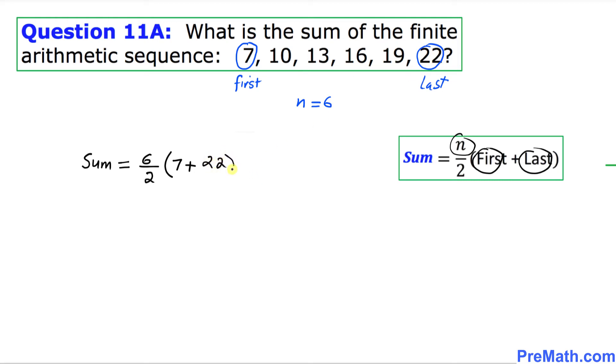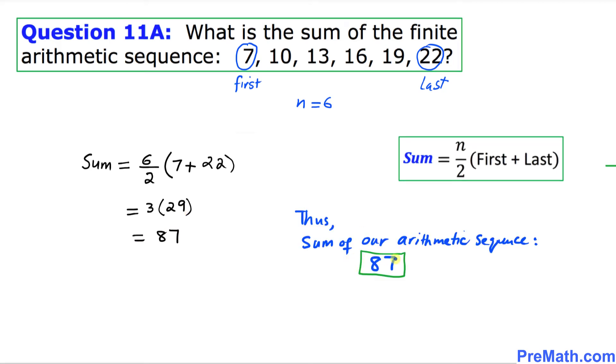Let's simplify. That's going to give us 3 times 29, that is going to give us 87. Thus the sum of our arithmetic sequence turns out to be 87 and that is our answer.